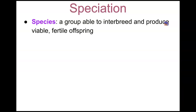What is speciation? First we need to look at what is a species. A species is a group of organisms that are so closely related that they're able to interbreed, and the key thing here is to produce viable fertile offspring. That means those offspring that are produced are fertile and able to produce offspring themselves. If they can't do that, then they're not really a true species by the sense of biology.